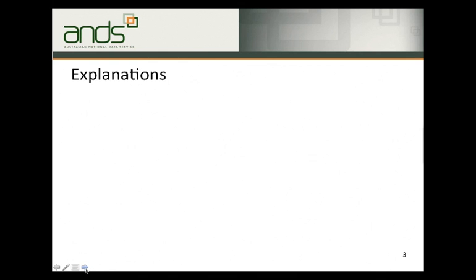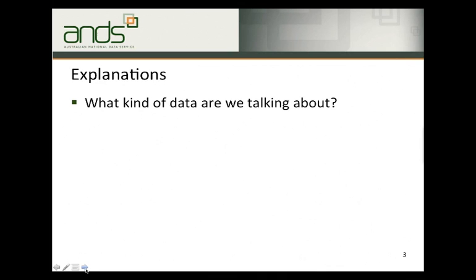Before we go any further, I'd like to be a little more precise about what we're talking about. First of all, what kind of data are we talking about? We mean data which is created in the course of research on human subjects and which is subject to ethical approval and oversight. The data might be statistical data, survey data, audiovisual materials of one kind or another, or in other forms and formats. While we tend to think of health and medical data immediately here, there are many disciplines involved in research which need ethical approval and oversight.